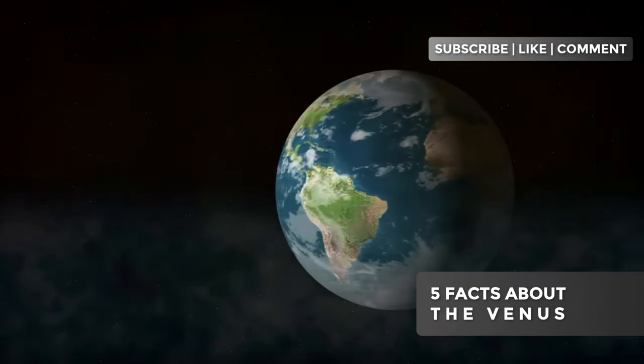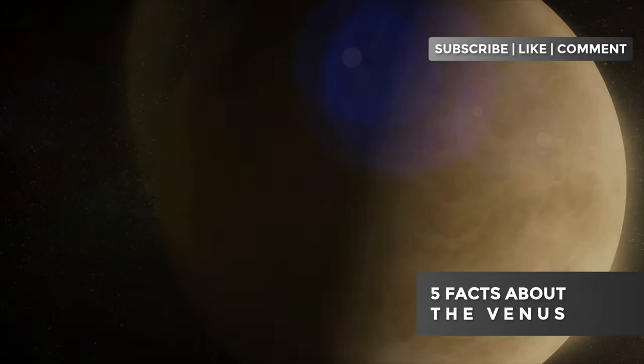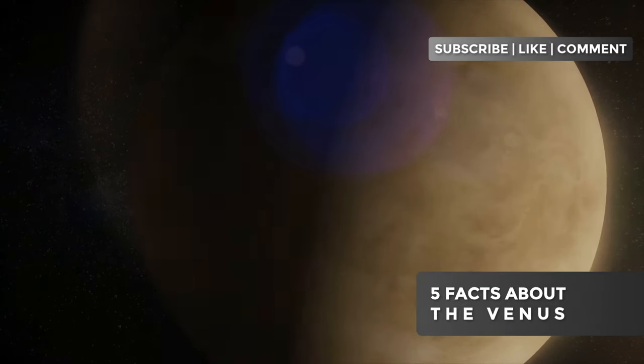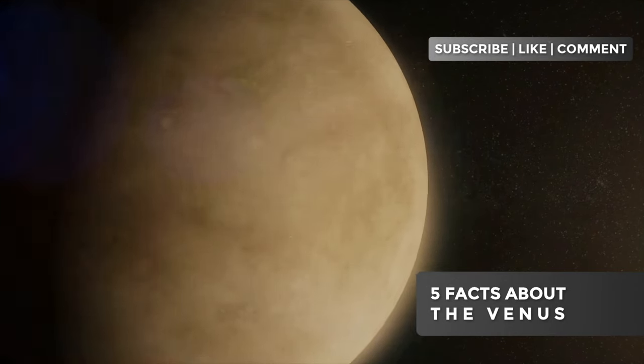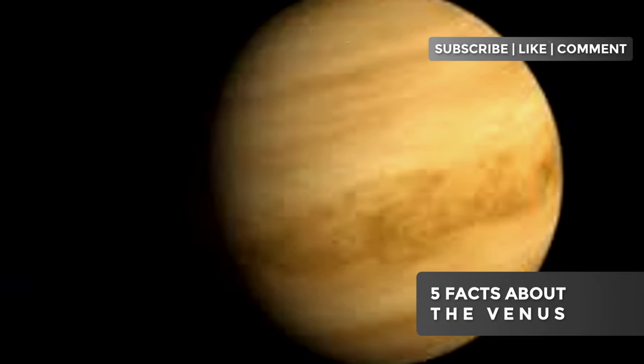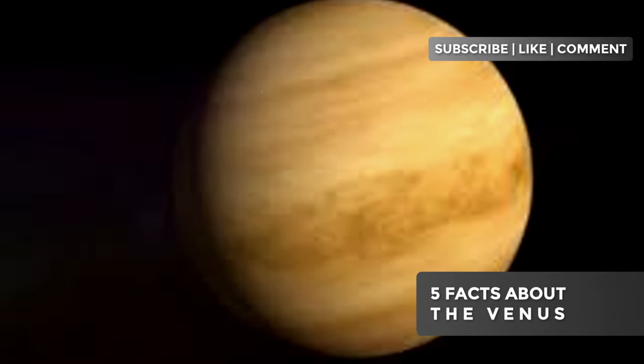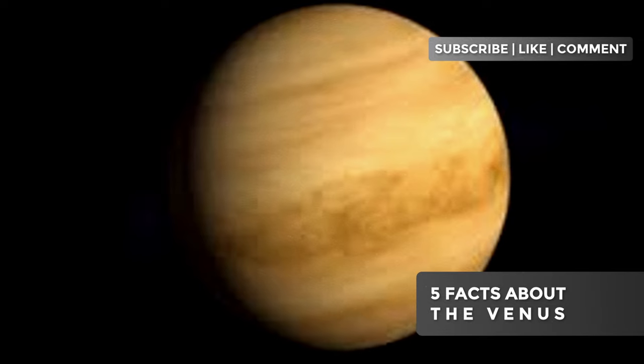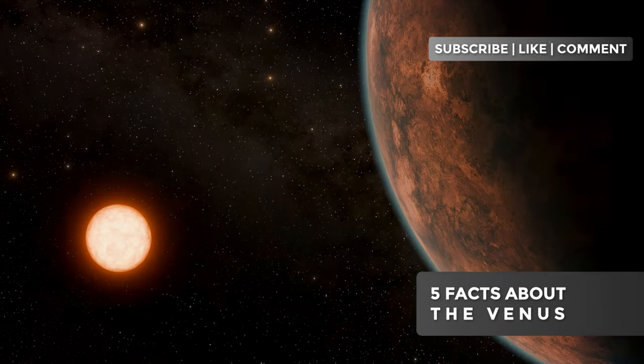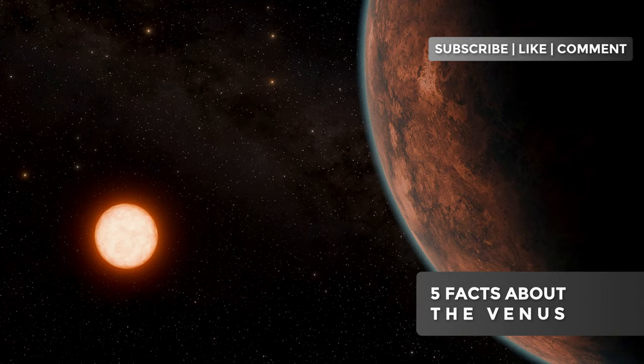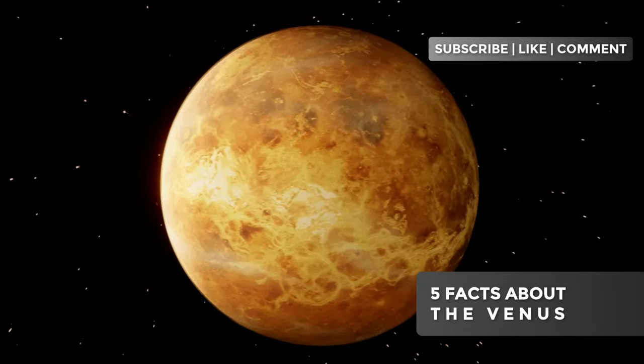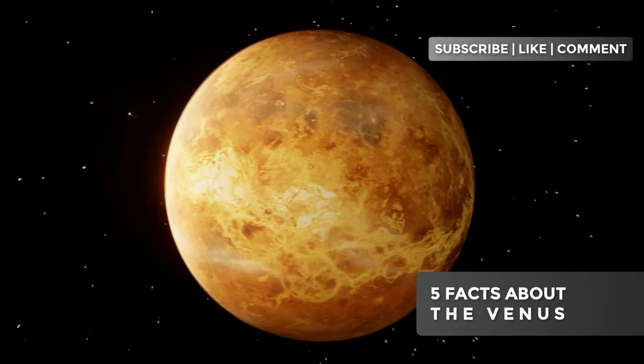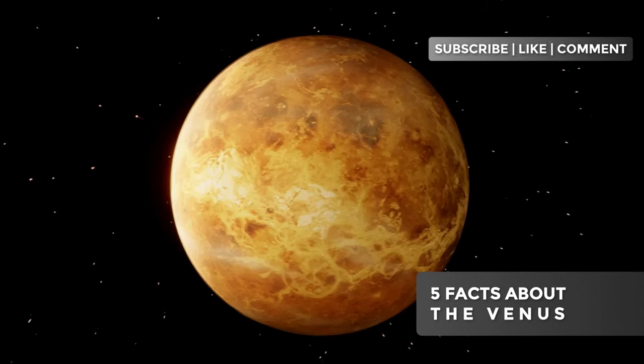Moreover, this slow rotation profoundly affects Venus's climate patterns. On Earth, rapid rotation creates complex atmospheric circulation systems. On Venus, however, the slow rotation allows for the formation of a single massive convection system that extends from the equator to the poles, contributing to the uniformity of extreme temperatures across the entire planet. This Venusian time paradox not only challenges our understanding of planetary dynamics, but also offers valuable insights into the diversity of conditions that might exist on exoplanets beyond our solar system. The discovery of worlds with equally unusual rotations could redefine our search for potentially habitable planets. Now that we've explored how Venus challenges our notions of time, let's dive into another surprising aspect of this planet, its unique atmosphere and the extraordinary phenomena it harbors.